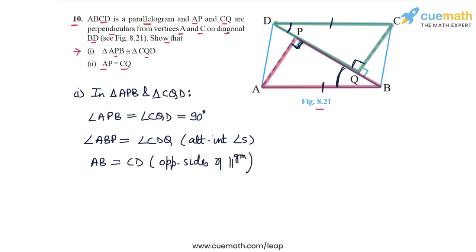So in the two triangles, two angle pairs and one side pair are equal. And hence, we can apply the ASA congruence criterion. So we can claim that triangle APB is congruent to triangle CQD by the ASA congruence criterion. So this proves part one, that the two triangles are congruent.